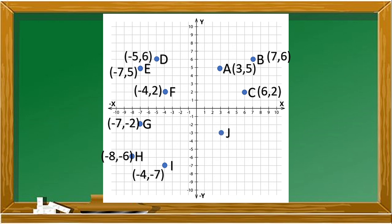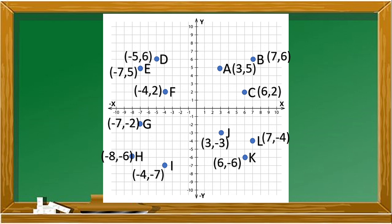Next, what is the coordinate of our point J? The answer is negative three and negative three, and it is located in quadrant four. For point K, the answer is negative six and negative six, and it is located also in quadrant four. And for our last point L, the answer is seven and negative four, and it is located also in quadrant four.